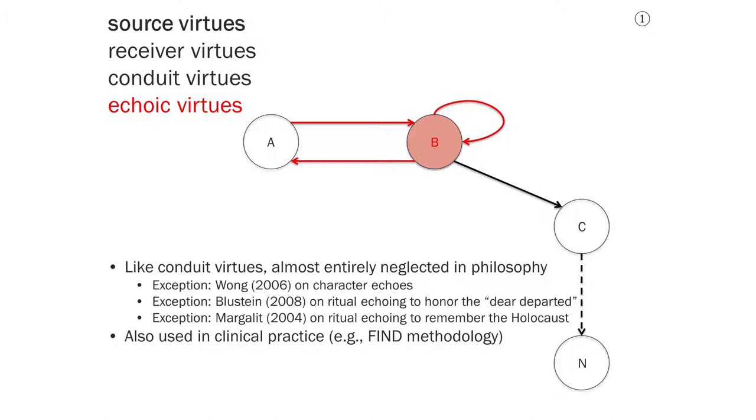Echo virtues are the fourth type of virtues we're going to think about in this discussion, and they might seem a bit unnecessary. After all, if I tell you something and then you just repeat it back to me, that seems sort of useless. And if I tell you something and you repeat it to yourself, again, that might seem kind of useless. So echo virtues, maybe rightly, have been ignored by most philosophers. There are three exceptions that I can think of, however.